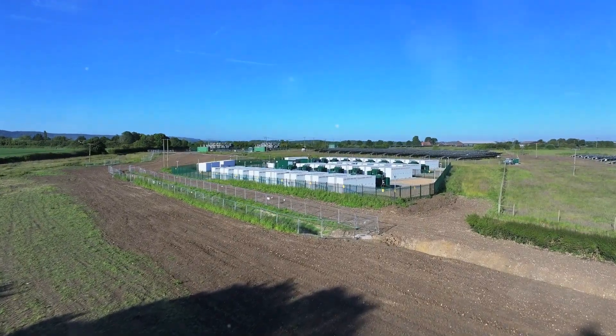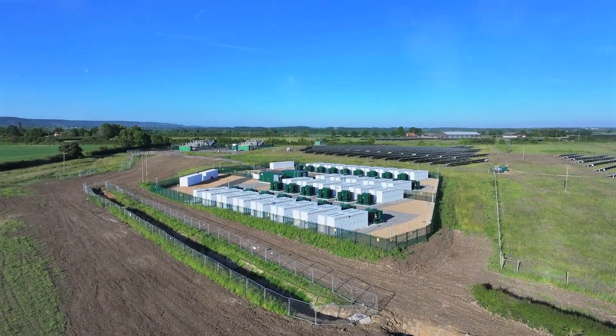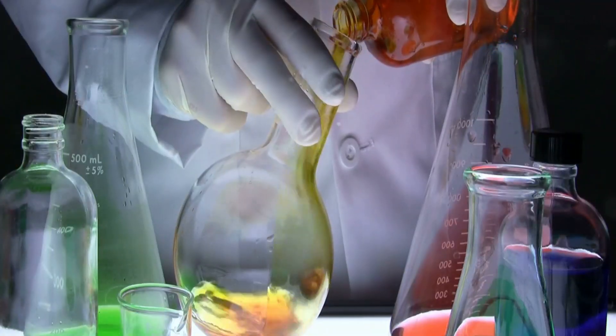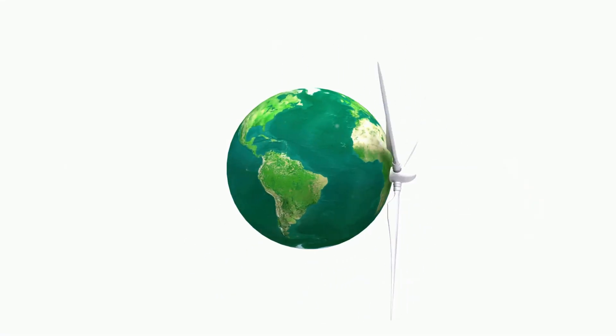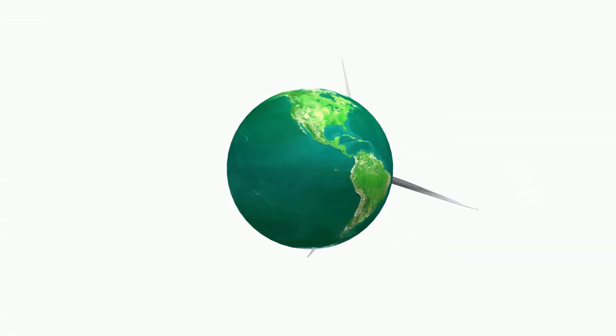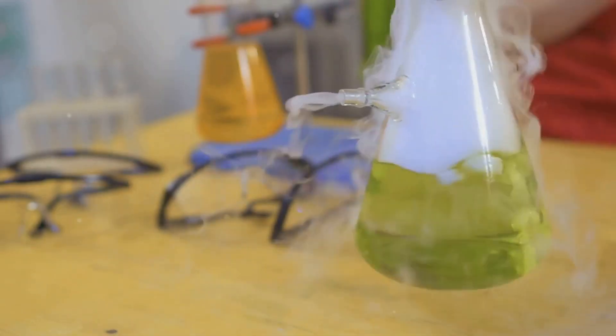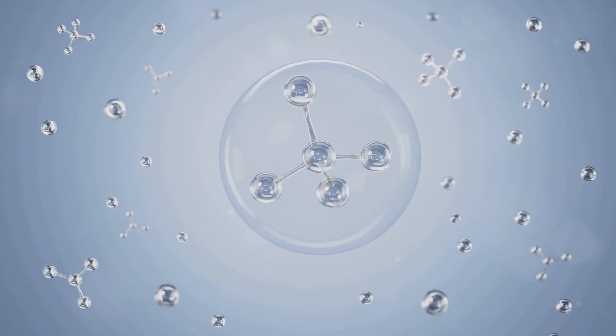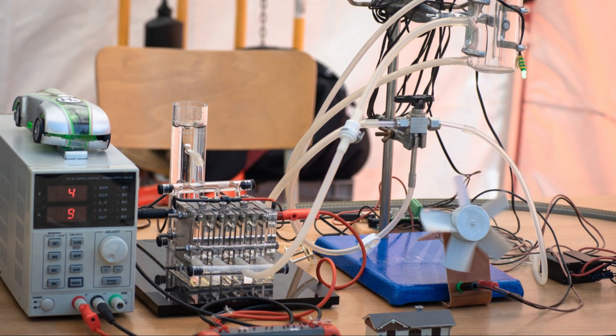For starters, many microfluidic fuel cells can run on fuels derived from renewable sources, such as hydrogen produced from solar or wind power, or methanol derived from biomass. This means we can generate power without relying on fossil fuels, reducing our carbon footprint. Plus, the byproducts of microfluidic fuel cell reactions are often minimal and environmentally benign. Remember, when hydrogen reacts with oxygen, the only byproduct is water. Talk about a clean energy source.